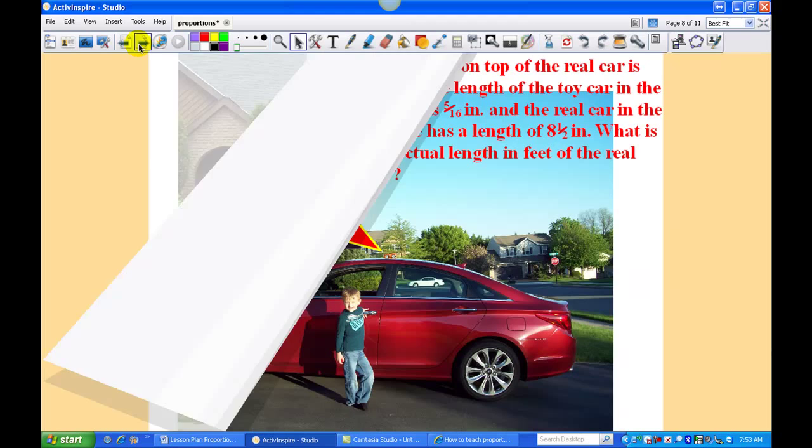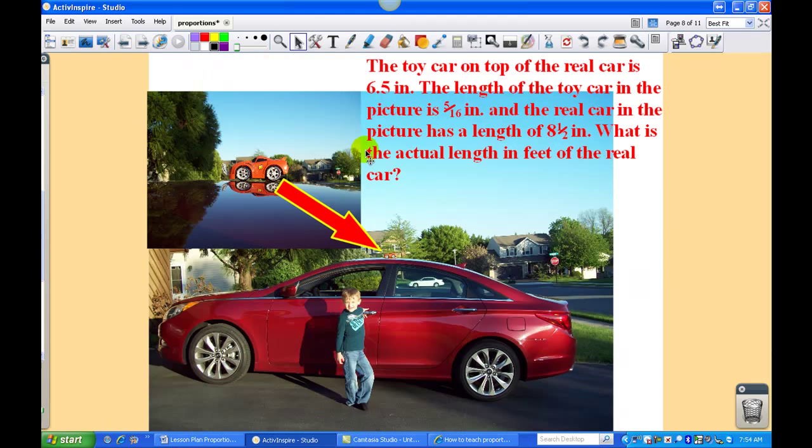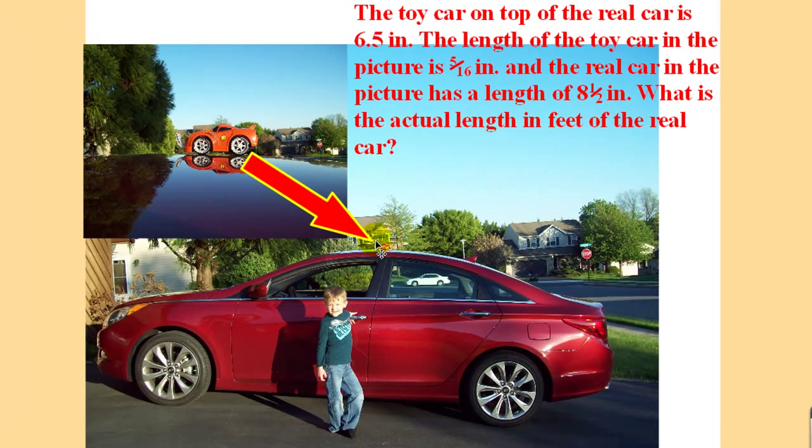Here's one more example. In this example, I have a toy car sitting on top of a real car. And I know the length of the toy car. And we can then solve to figure out the length of the real car, given these conditions. So I have it set up with enough information that the students should be able to set up this proportion themselves.